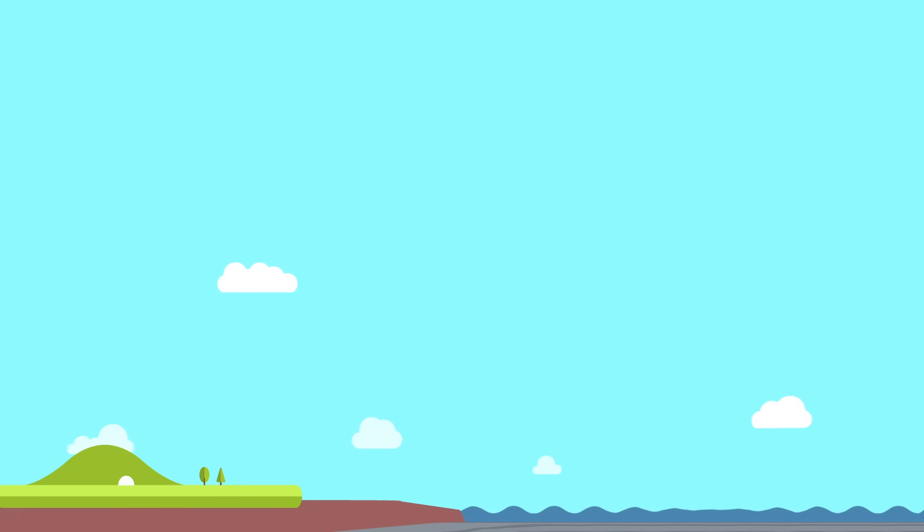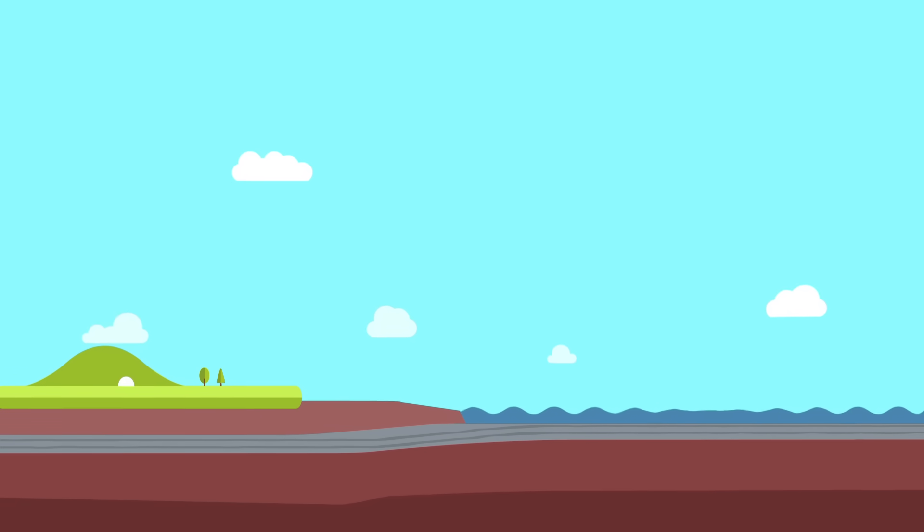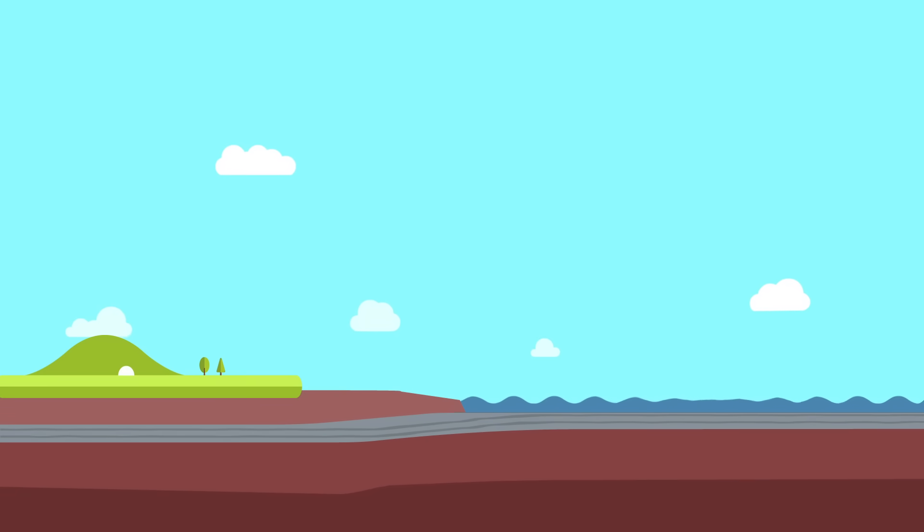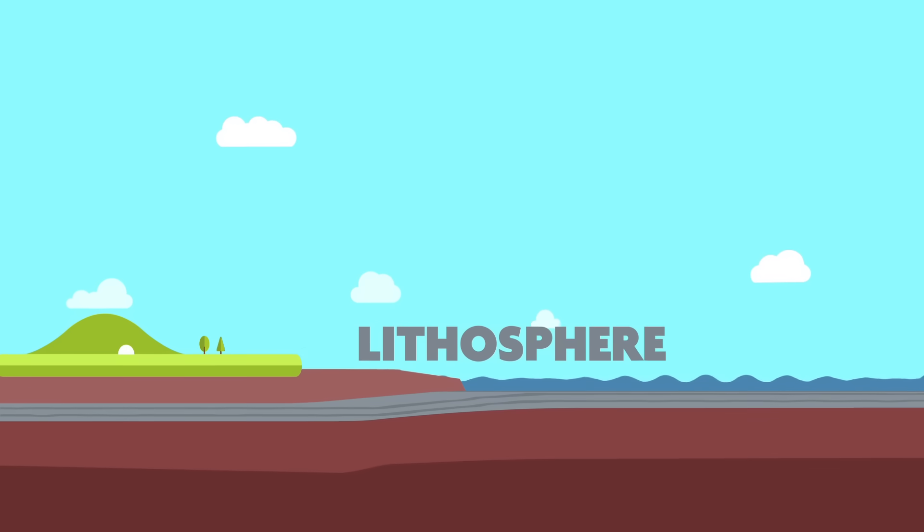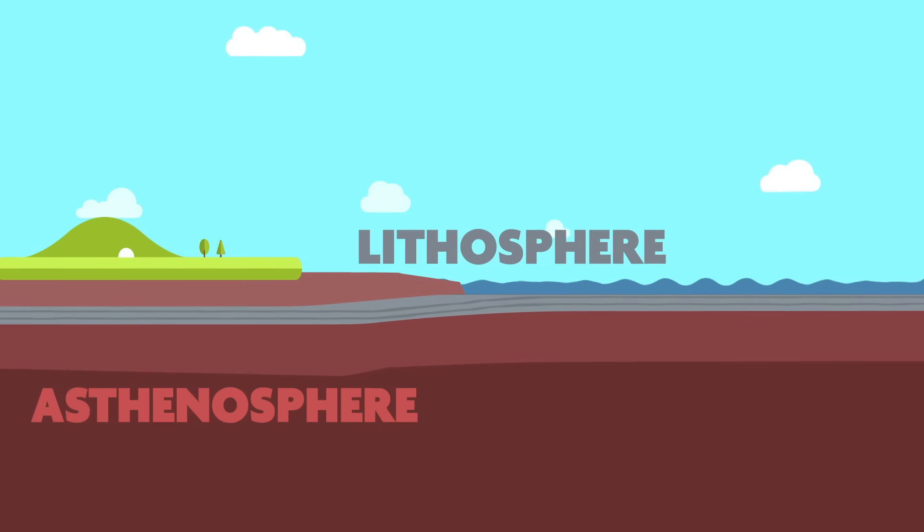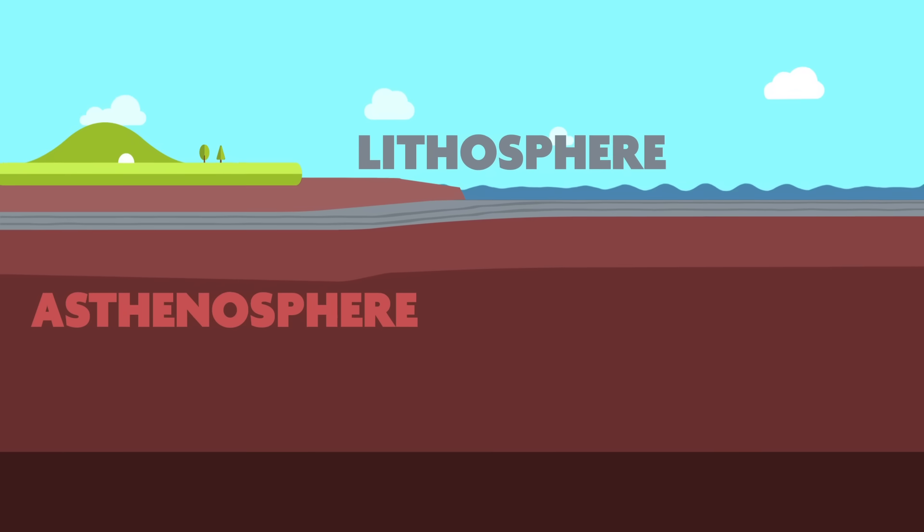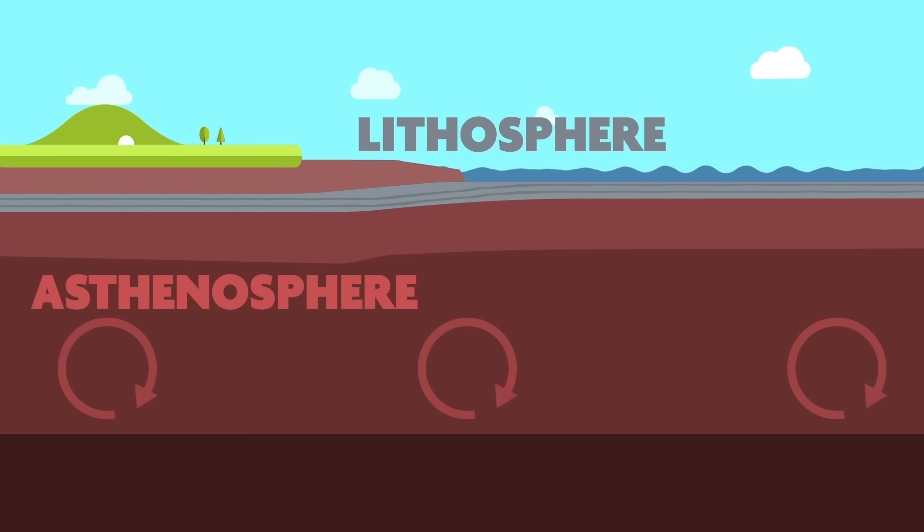So where do these powerful underground forces come from? As we've already mentioned, the ground we stand on is always moving. Below the crust on which we live is the Earth's mantle. The 100km thick layer of solid rock, including the crust and part of the upper mantle, is called the lithosphere. The upper mantle that lies beneath the lithosphere is called the asthenosphere. The asthenosphere is also solid, but the rock here is softer due to high pressure and high temperatures. Differences in temperature between the inner and outer parts of the asthenosphere allow convection to occur.